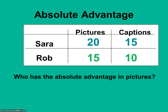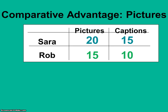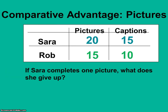We know that Sarah has the absolute advantage in both picture cropping and caption writing, but let's figure out who has the comparative advantage. To discover this, we need to calculate Sarah's opportunity cost for one picture and Rob's opportunity cost for one picture, and see whose is lower — who gives up less in order to crop a picture.